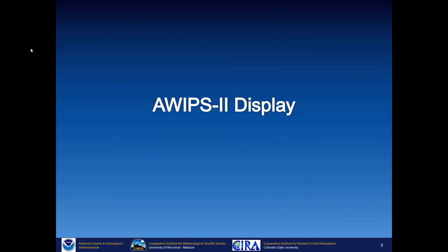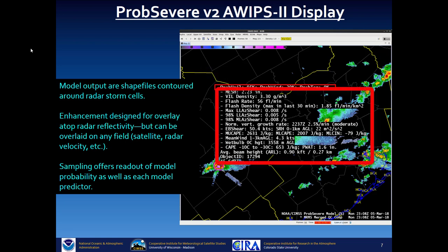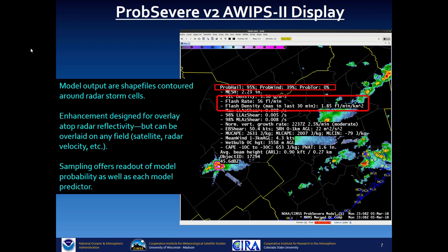In AWIPS, PROB HAIL is displayed as a shapefile contoured around radar storm cells. The enhancement is designed to be an overlay on top of radar reflectivity, but it can overlay any field. The sampling provides a readout of the model probability as well as each model predictor. Note that flash rate and flash density in PROB SEVERE come from Earth Network's total lightning.